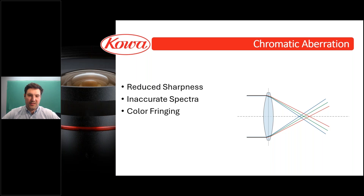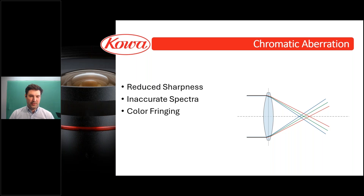Chromatic aberration affects hyperspectral imaging by causing different wavelengths of light to focus at different distances from the lens. As you can see in the diagram, different wavelengths are reflected at different angles, which on a flat camera sensor means that light from a single point in the image will hit different areas of the sensor. This results in reduced sharpness — significant aberrations at the edges can cause noticeable sharpness reduction. Since each pixel in a hyperspectral image contains spectral information, chromatic aberration will distort the collected data. To minimize these effects, use lenses designed to correct or significantly reduce chromatic aberrations.